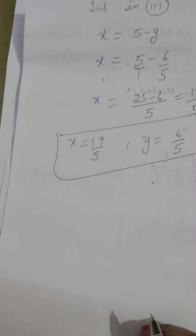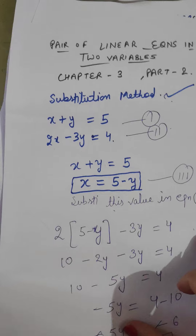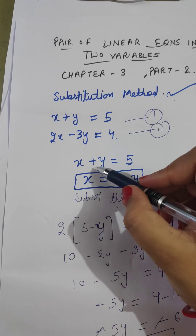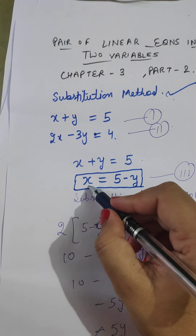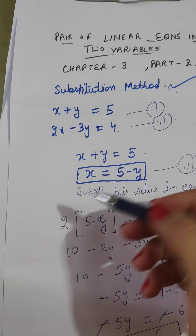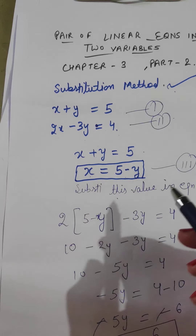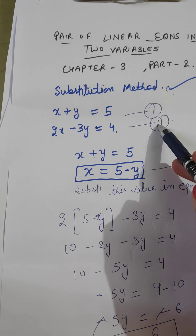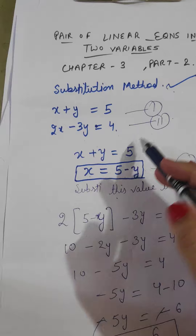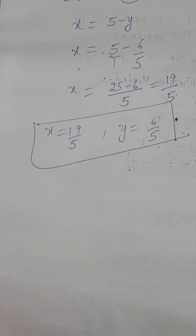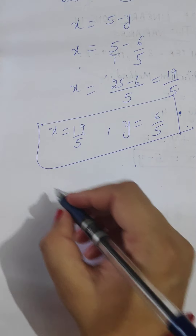This is the substitution method. Once again: given two equations, choose the simpler one. Calculate the value of one variable — either the first or the second, your choice. Substitute this value into the other equation, and by solving this you can get the values of x and y. Similarly, let us take another example.